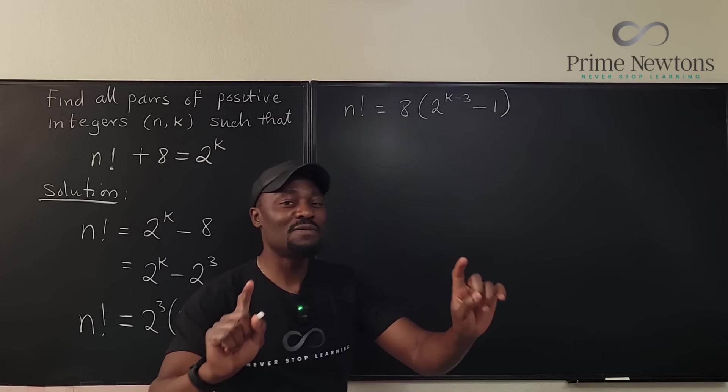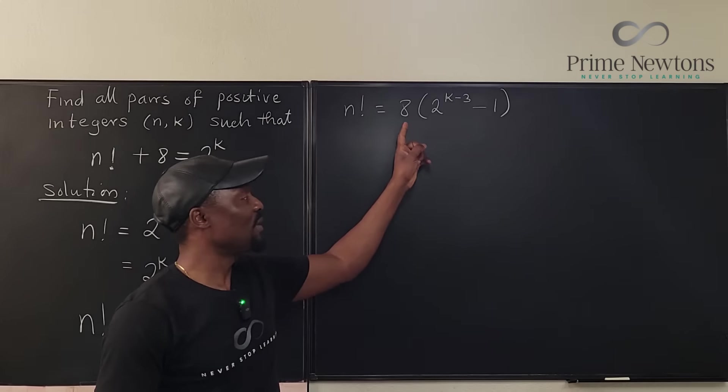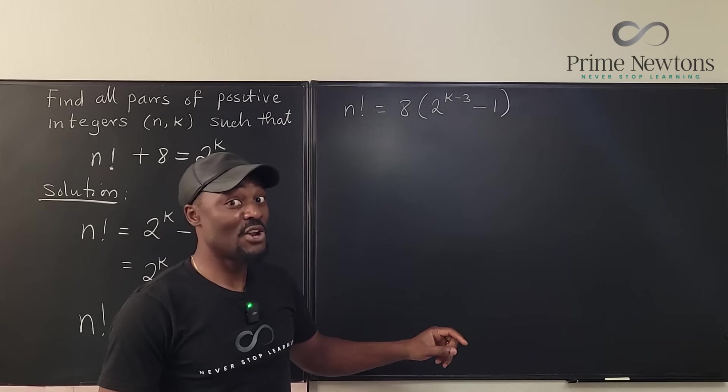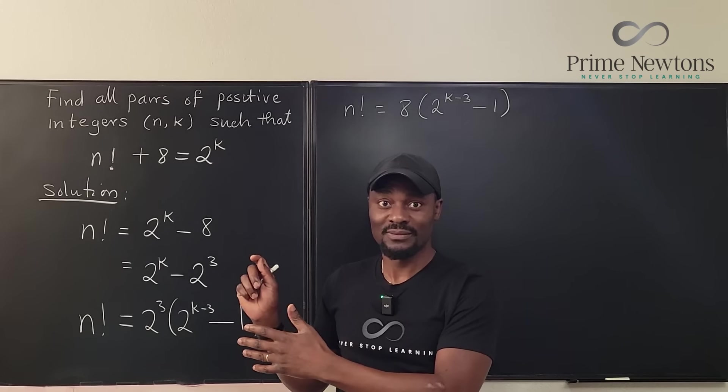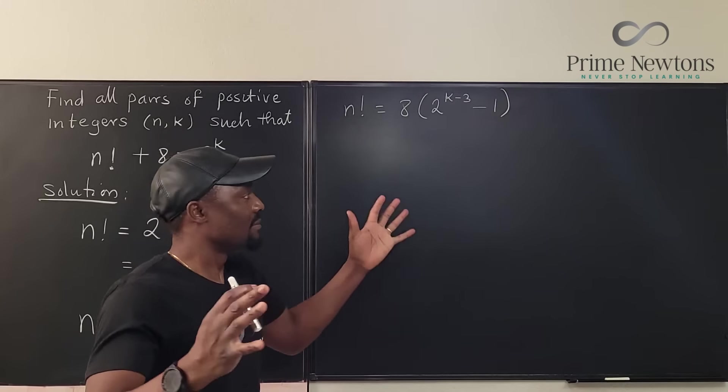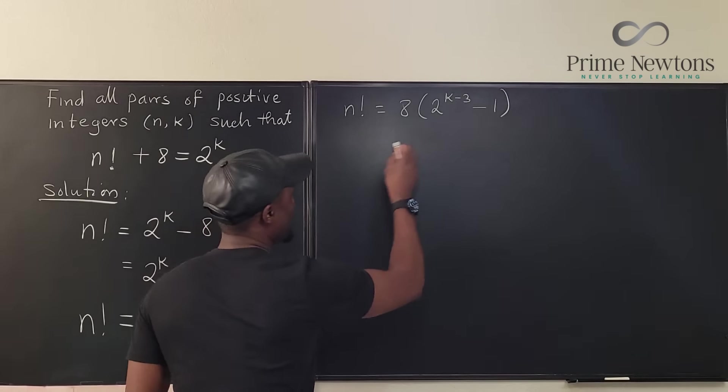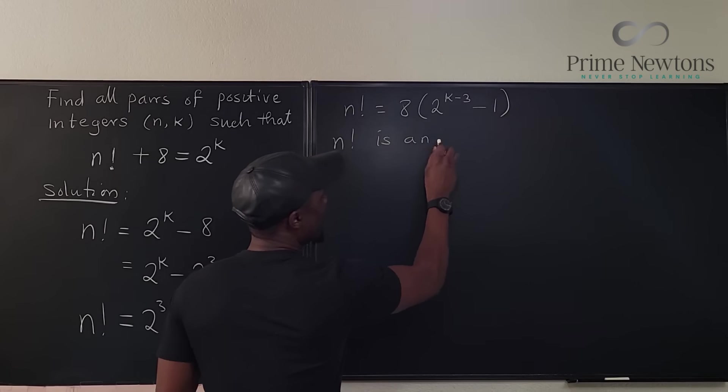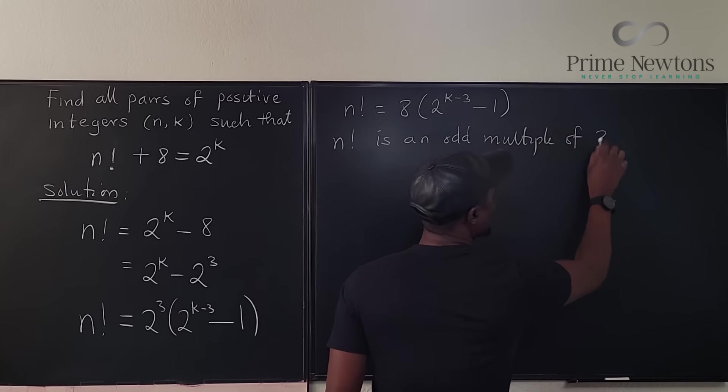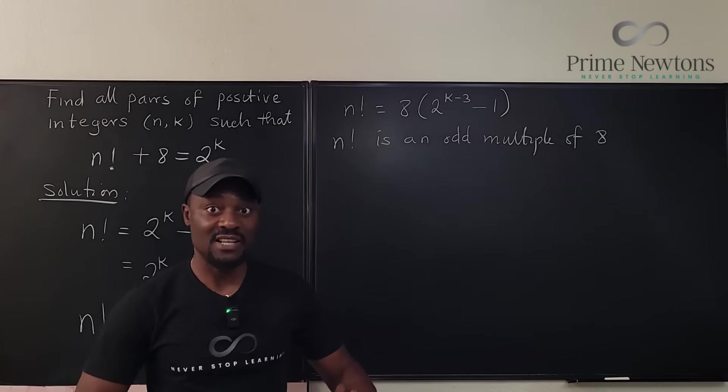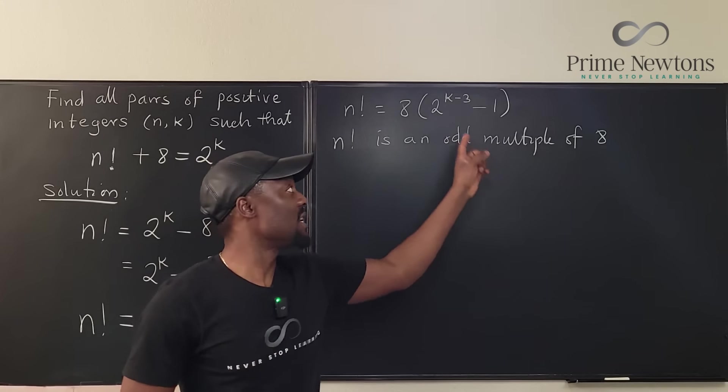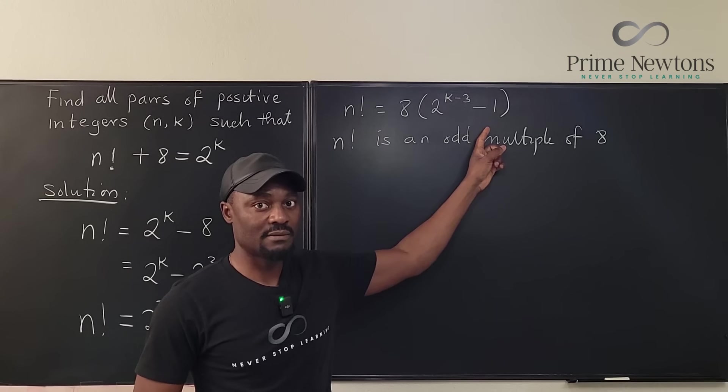So you're looking for a factorial which is a multiple of eight, but it is an odd multiple of eight. There are not many of them, and that's what makes this problem solvable. Let's write the fact here: n factorial is an odd multiple of eight. So it's either 8 times 1 or 8 times 3 or 8 times 5 or 8 times 7 or 8 times 9, but it cannot be an even number because this is odd.